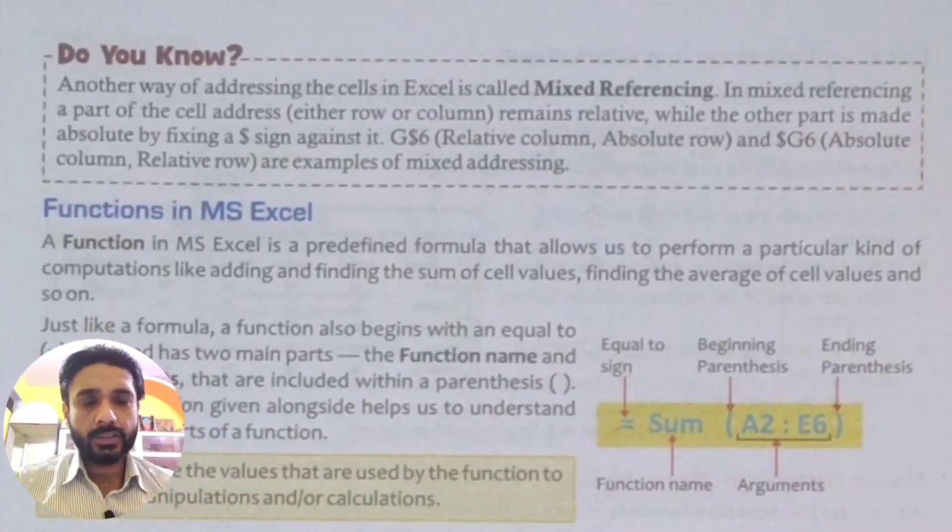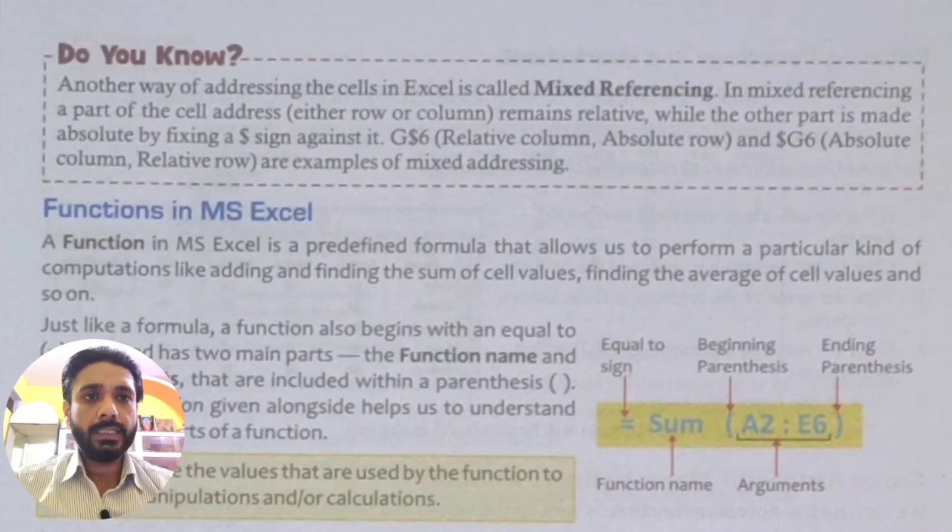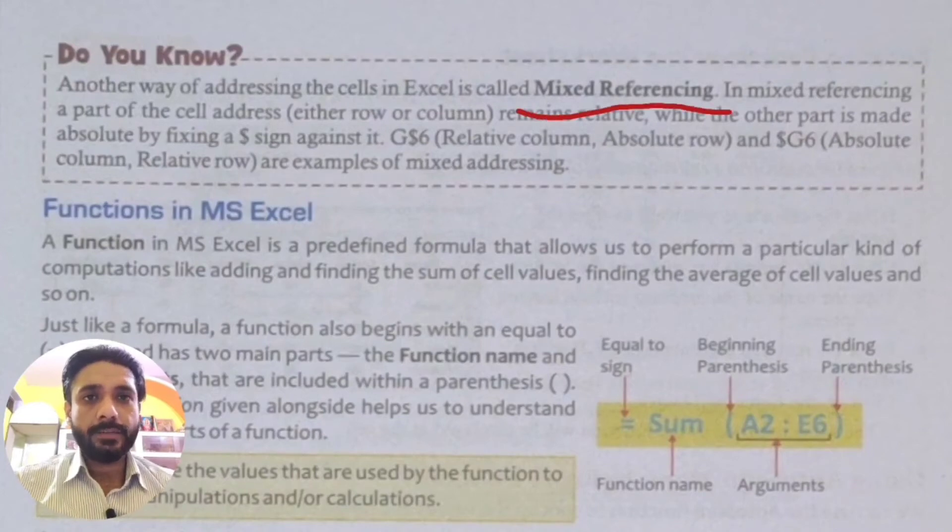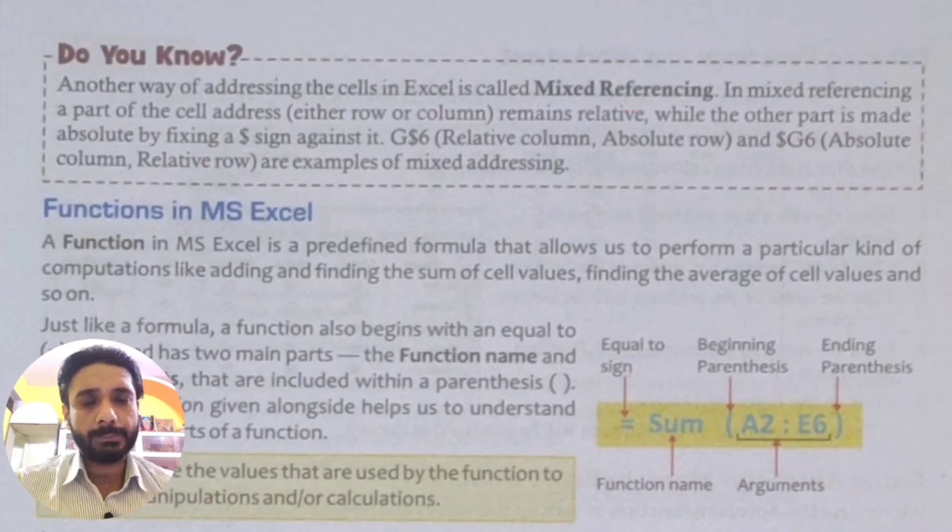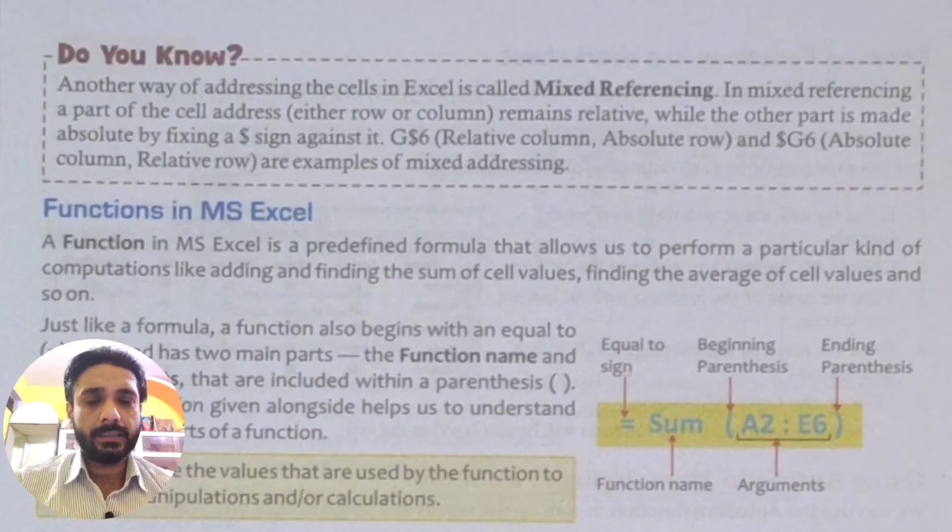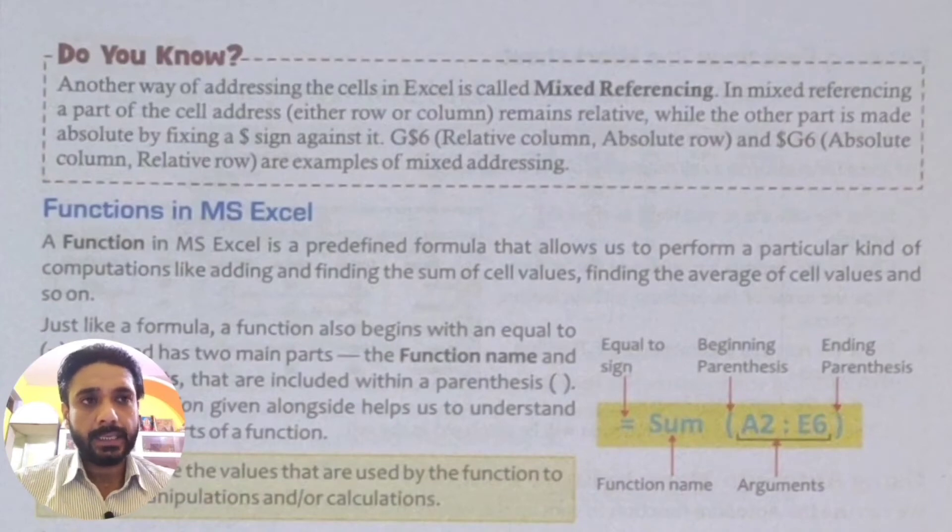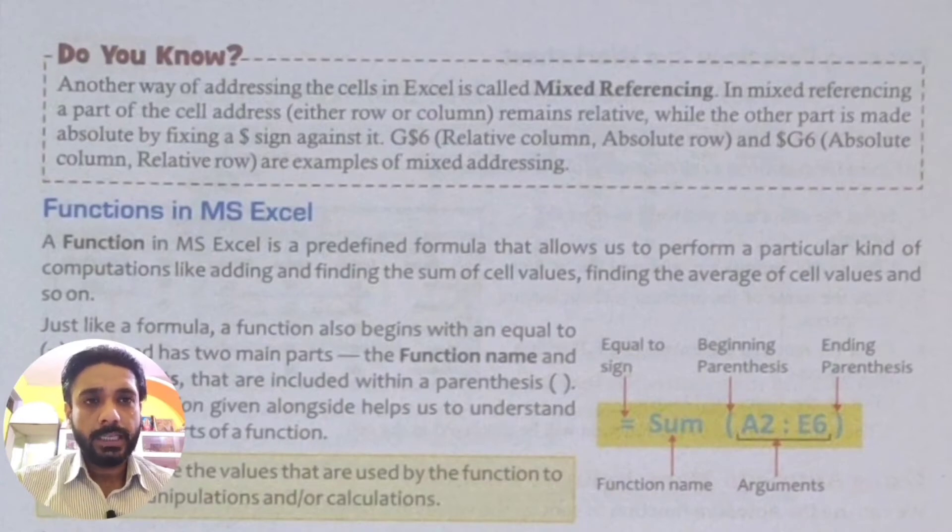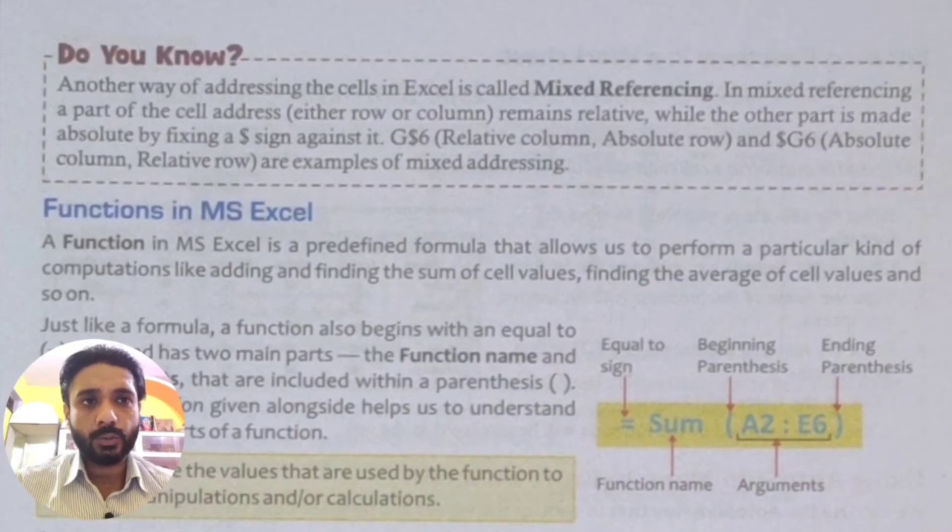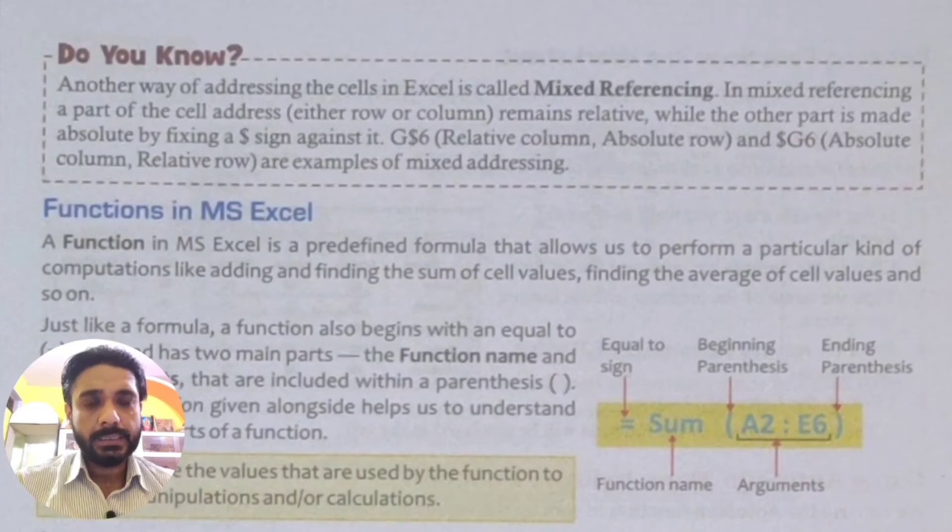Another way of addressing the cell in Excel is called mixed referencing. What is mixed referencing? If we talk about mixed referencing, in mixed referencing, a part of cell address, either row or column, remains relative while the other part is made absolute by fixing a dollar sign against it. Examples of mixed referencing means say G dollar 6 where G is a relative column and dollar 6 represents absolute row or if we write dollar G 6 it means G is an absolute column and 6 is a relative row. So these are the examples of mixed addressing or referencing.